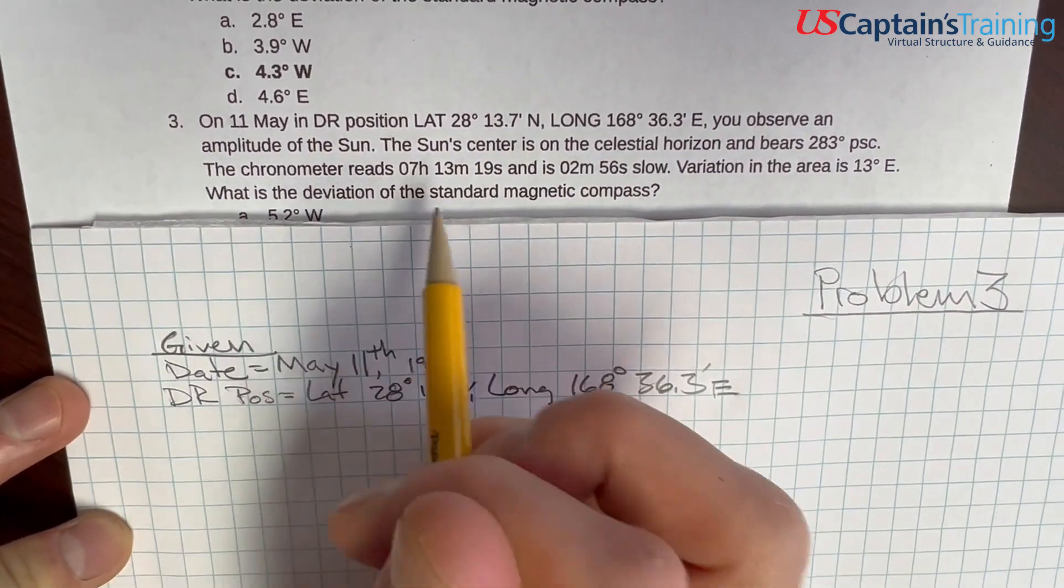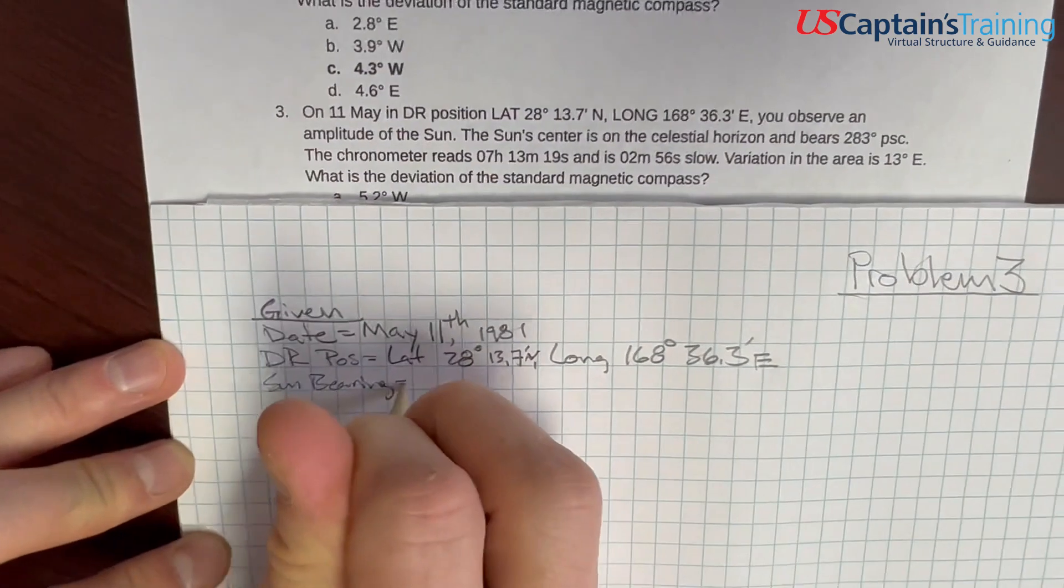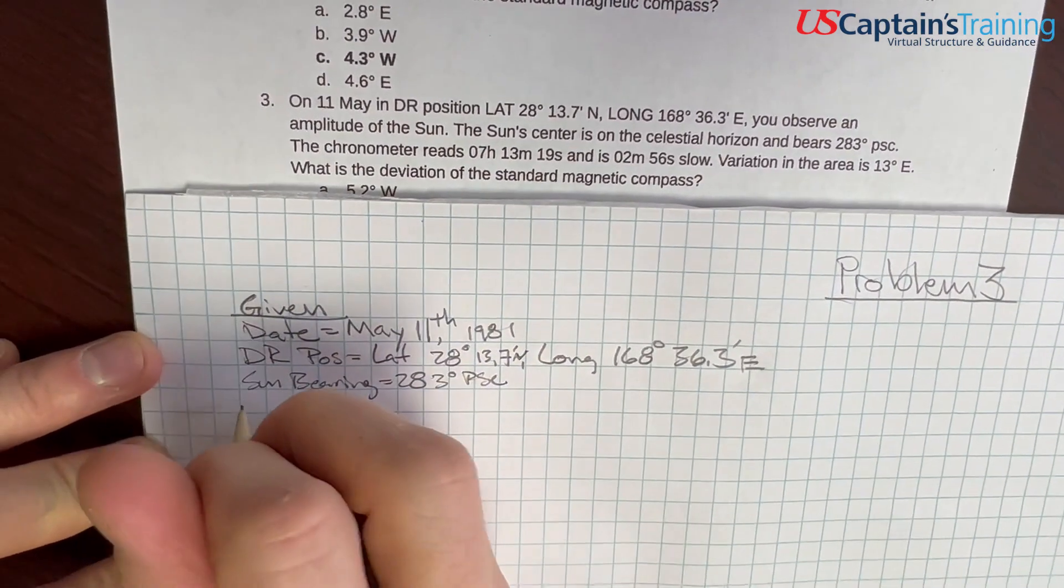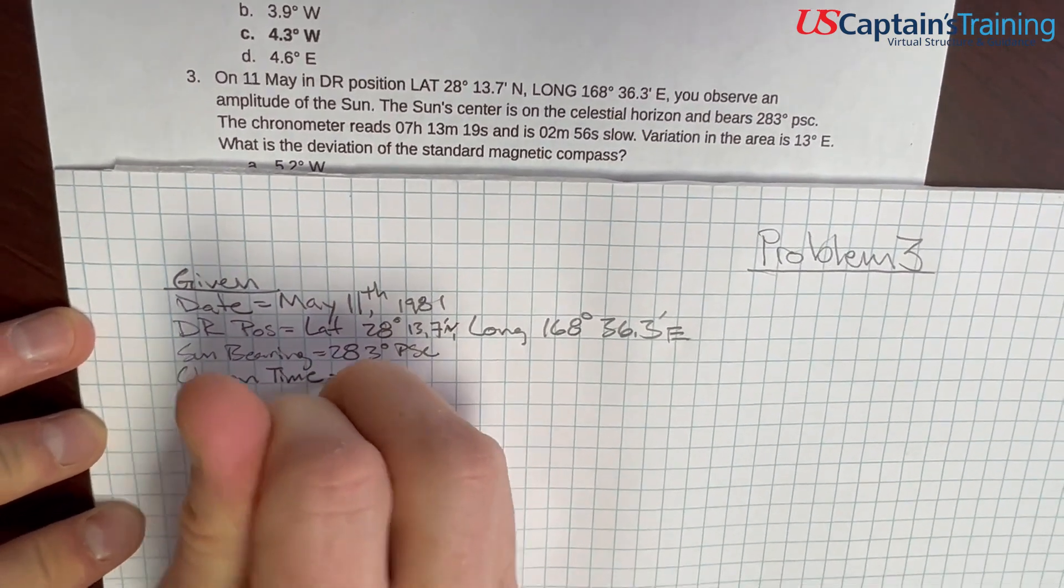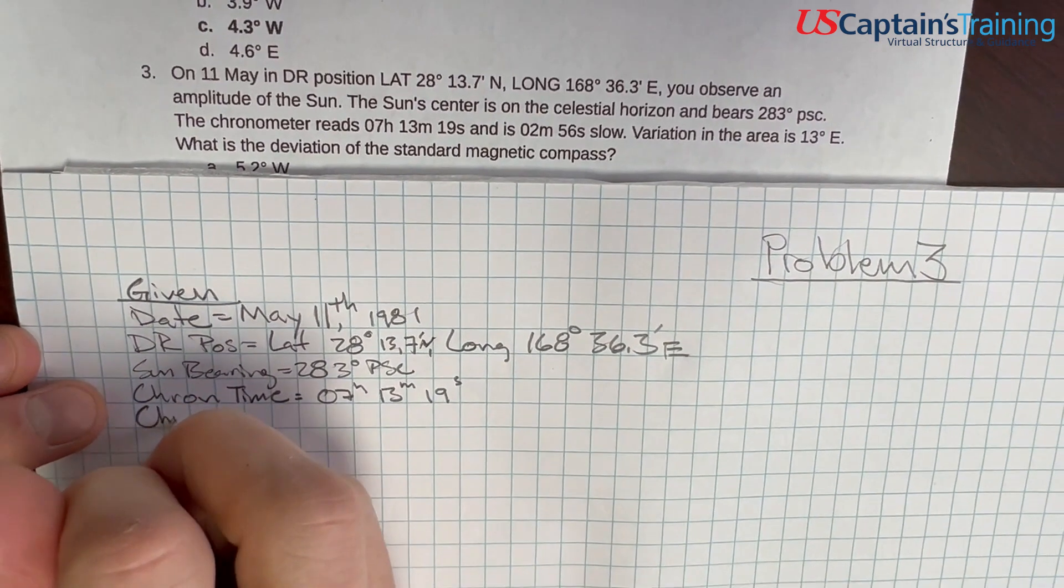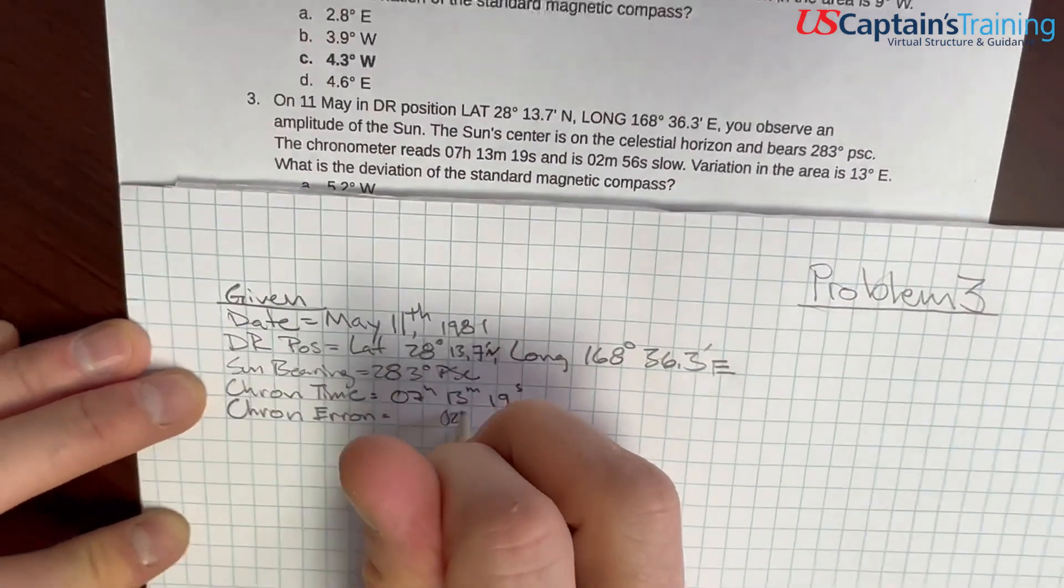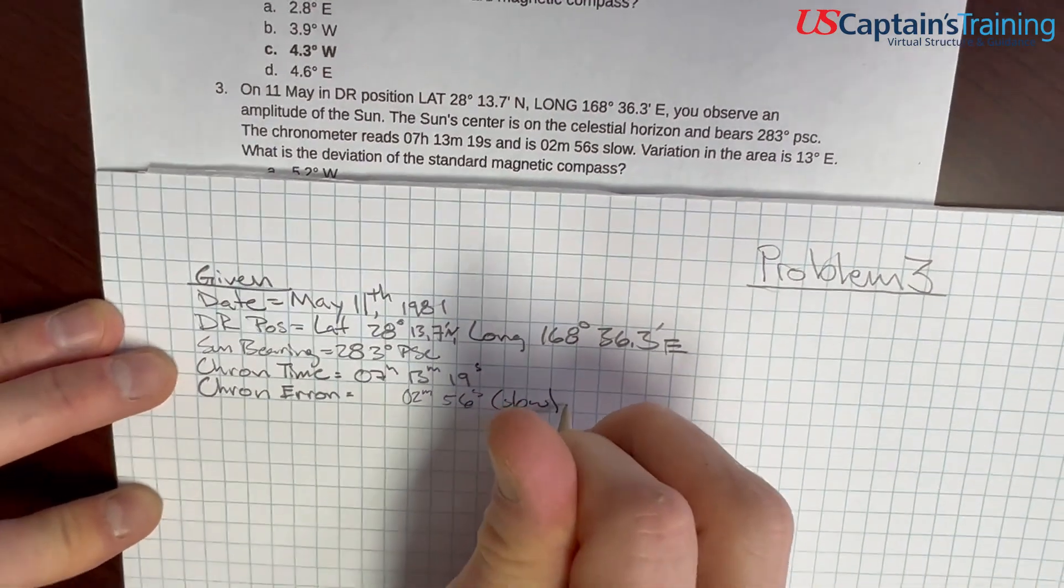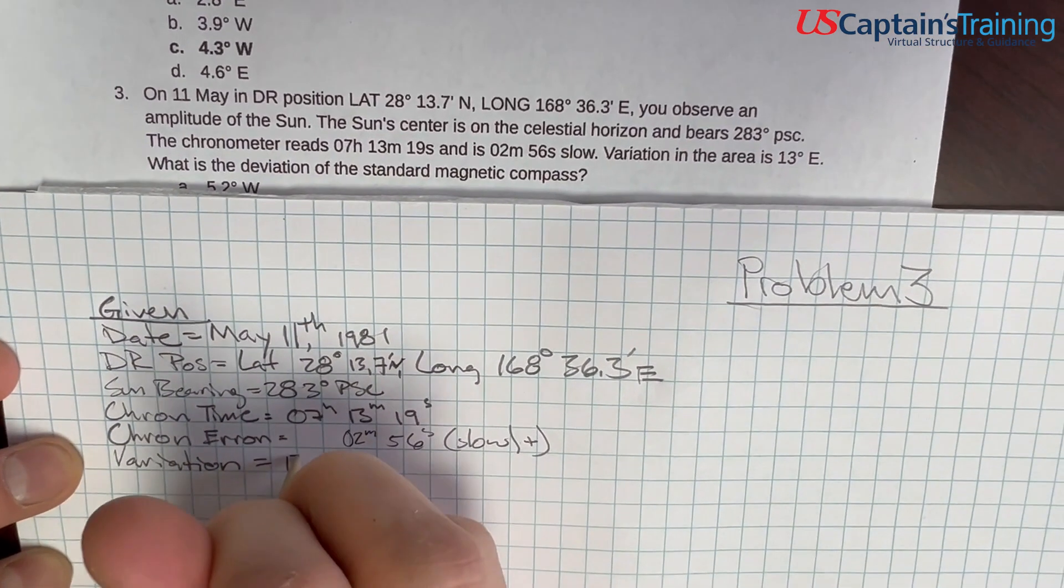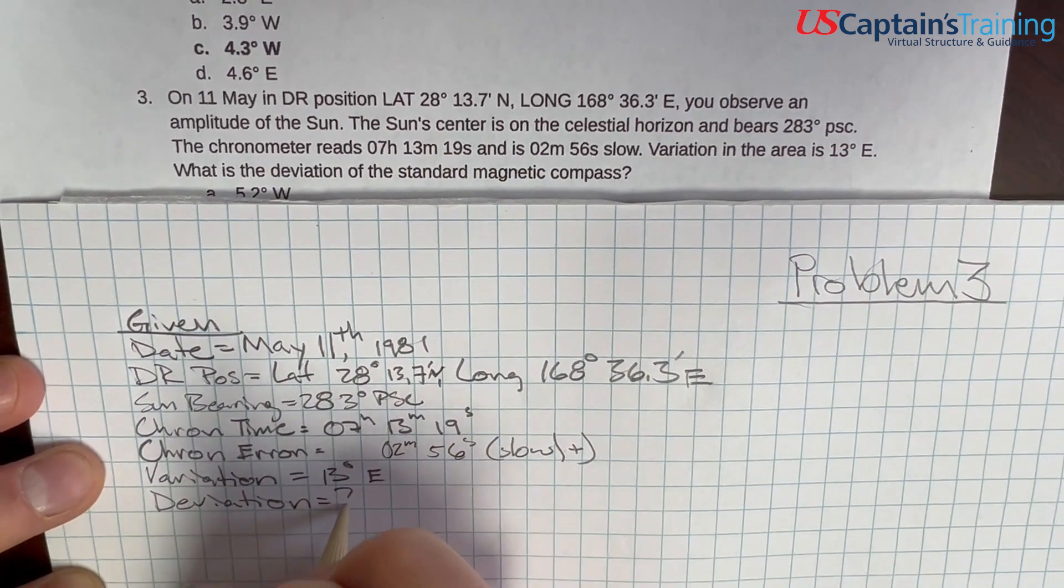And you observe an amplitude of the sun. The sun centers on the celestial horizon, it bears 283. So the sun bearing equals 283 degrees PSC. The chronometer reads 7 hours 13 minutes 19 seconds. And we're given the chron error, which equals 2 minutes 56 seconds slow, which means we add it to catch back up. And the variation is 13 degrees east. Deviation is what we're looking for.